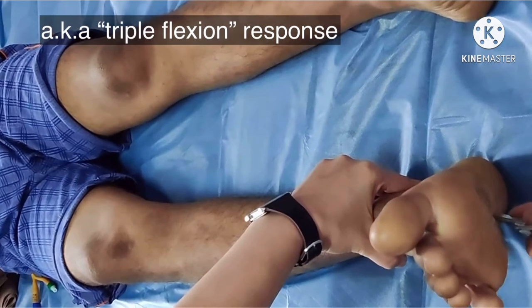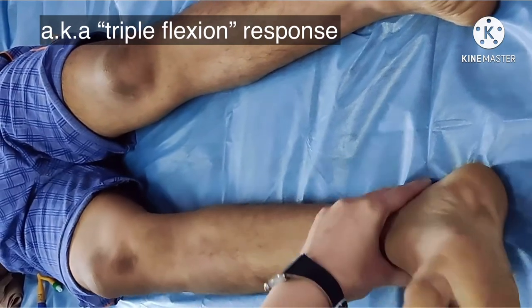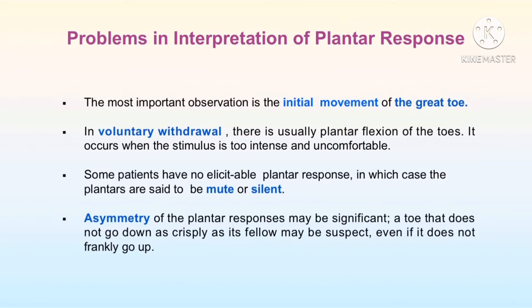The findings may not be straightforward in all patients. We have to focus on the initial movement of the great toe. In voluntary withdrawal, there is usually plantar flexion of the toes and it occurs when the stimulus is too intense or uncomfortable. Some patients have no elicitable plantar response, in which case there is no movement of the great or small toes — the plantar is said to be mute or silent. Sometimes we might observe asymmetry of the plantar response on two sides, which may also be significant. A toe that does not go down as crisply as its fellow may be suspect even if it does not frankly go up.